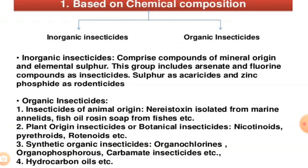The next class is organic insecticides. Organic insecticides of animal origin are isolated from marine annelids, fish or fish oil, and rosin soaps from fishes. Plant origin or botanical insecticides include nicotinoids derived from nicotine, pyrethroids, and rotenoids. Synthetic organic insecticides include organochlorine, organophosphorus, and carbamate insecticides, as well as hydrocarbon oils.